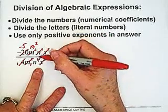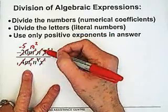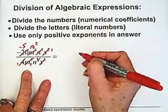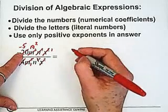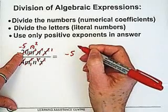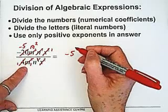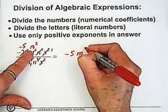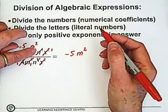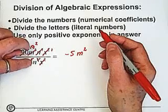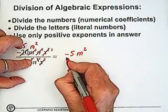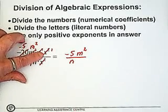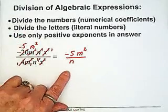It's important when you're doing this to be very careful as you go through it, because as you can see it looks a little messy. You want to be really clear with yourself about what you've done. I know that minus 20 divided by 4 left me with minus 5. I know that m to the fifth divided by m cubed left me with m squared. I know that I had 3 n's in the numerator and 4 in the denominator, so I now have an n in the denominator. And my x squared cancelled one another out. So this is my answer.